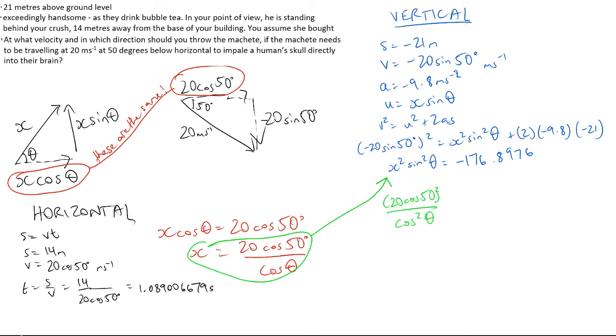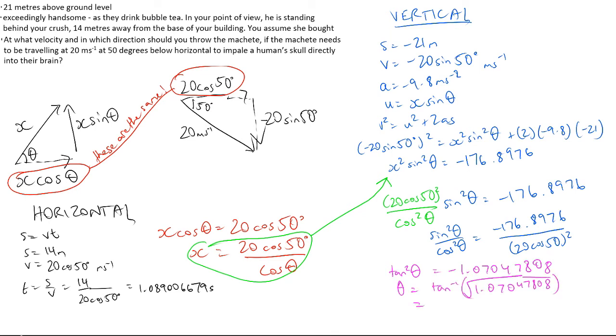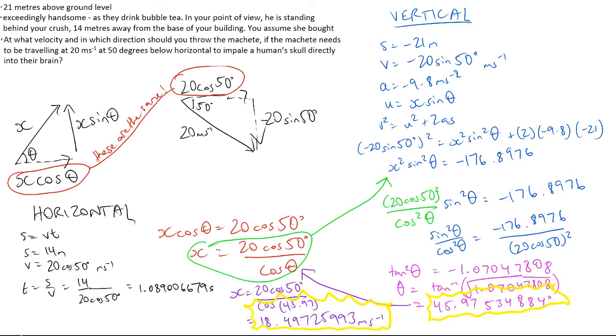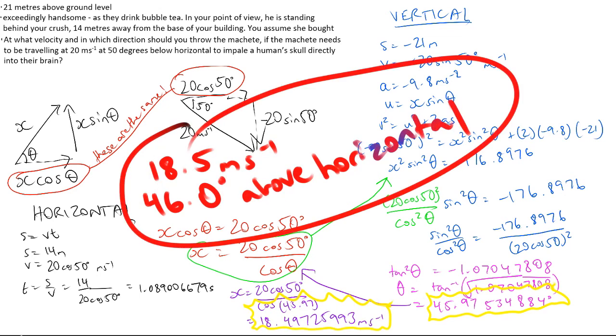This gives you sin squared theta over cos squared theta equals negative 1.07. Sin squared theta over cos squared theta is the same as tan squared theta. Take the square root of 1.07, you can ignore the negative as this deals with squaring, and then inverse tangent to find theta, which is 46.0 degrees. Substitute theta back into the x cos theta equals 20 cos 50 equation to find x, which is 18.5 meters per second.